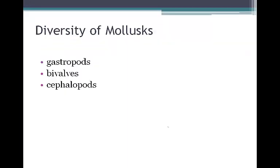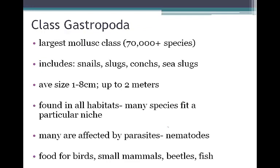We have three classes of molluscs: the gastropods, the bivalves, and the cephalopods. Our largest mollusc class is Gastropoda, which includes snails and slugs. They tend to be smaller, one to eight centimeters, but can be as big as two meters. They're found in all habitats and many species fit a particular niche. Many of these gastropods are affected by parasites — the nematodes that we just studied — and they often serve as food for birds and small mammals.